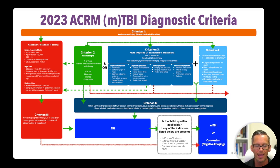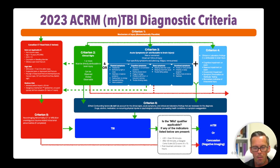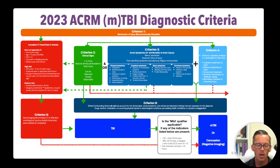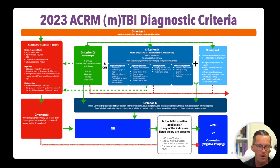Individuals at high risk who need a CT scan include those with a Glasgow Coma Score less than 15 at two hours after injury, a suspected open or depressed skull fracture, any signs of basal skull fracture — hemotympanum, raccoon eyes, CSF otorrhea or rhinorrhea, Battle's sign — and they're going to get imaged. Individuals at medium risk who will still get imaged include those with amnesia before impact greater than 30 minutes, or a dangerous mechanism of injury: a pedestrian struck by a car, an occupant ejected from a vehicle, or a fall from greater than three feet or five stairs. Those are the Canadian CT head rules.